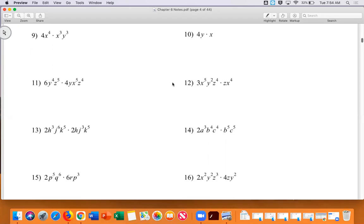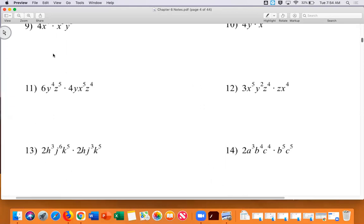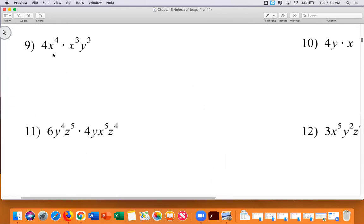So yesterday we were talking about this, Kanya. Remember we had three parts to number nine. With number nine, we have numbers, we have x's and we have y's. With the numbers, we only had four. But with the x's, we had x to the fourth and x to the third. What would that be? X to the seventh. And then we just had y to the third. So this problem just became four x to the seventh, y to the third.